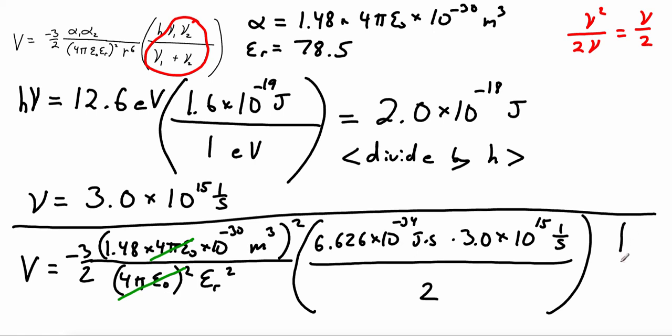We need to throw in our distance. So we have 10 to the negative 8 meters to the 6th. And before we plug in any numbers, we can check our units. So seconds cancel seconds, and we have meters to the 6th cancelling meters to the 6th.